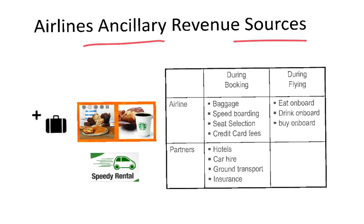Ancillary revenue comes from different sources. In this table I have divided the sources between those within the airline — such as baggage fees, speed boarding, seat selection, credit card fees, and food and drink on board — and those coming from partners. Airlines sell hotels, car rentals, ground transportation, and insurance through their websites. So we see these two types of ancillary revenue: in-house generated and via partners.